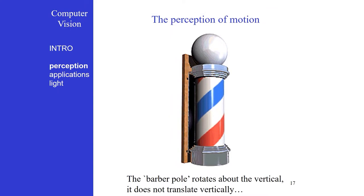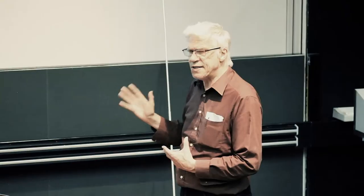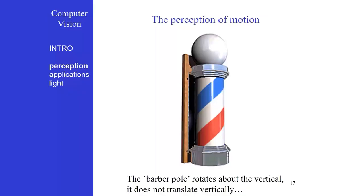This barber pole illusion gives us the impression of an upward motion, so we have the impression of vertical motion. But we know all too well that what must happen in reality here is that this cylinder with a pattern on it is just spinning about a vertical axis. So the real motion is actually horizontal and not vertical at all. So also motion can lead to mistakes.